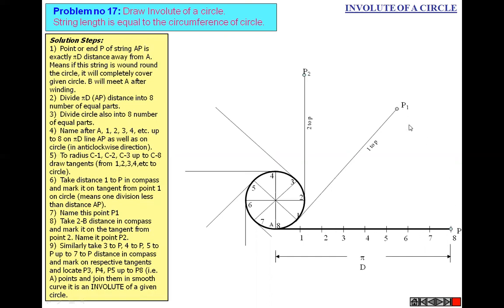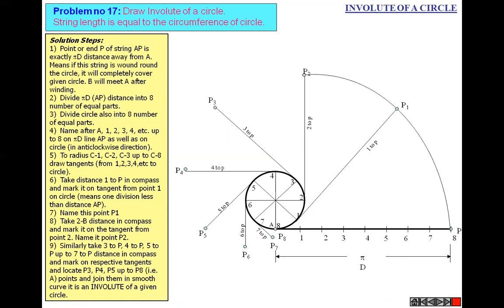Take the 1-to-P distance in a compass from the horizontal line and mark it on the first tangent. Take the 2-to-P distance in a compass and mark it from point 2 on the circumference onto the second tangent. Similarly, mark 3-to-P, 4-to-P, 5-to-P, 6-to-P on their respective tangents. Join all the endpoints P1, P2, P3, P4, P5, P6, P7, and P8. The resulting curve is known as the involute.